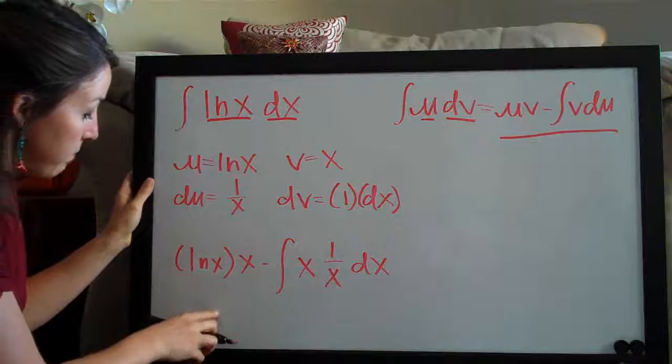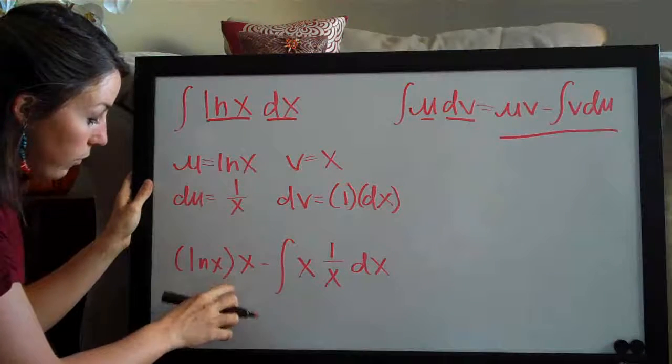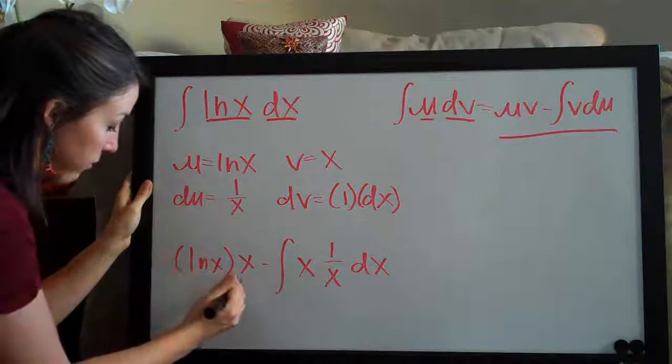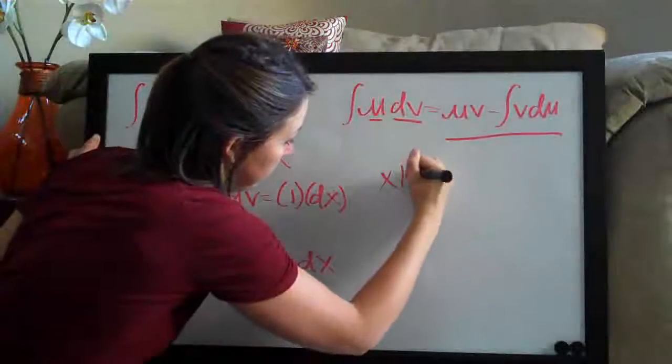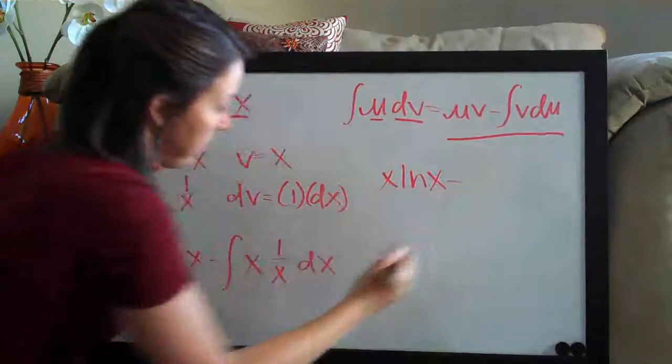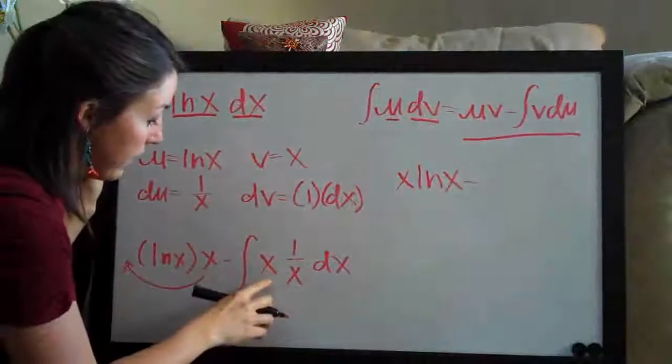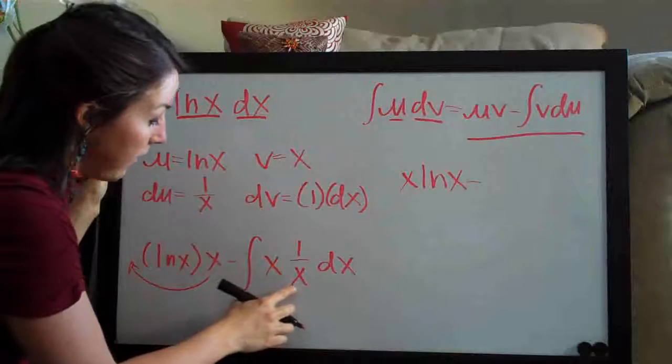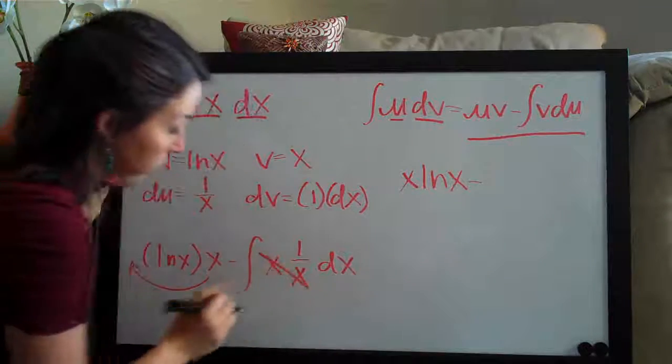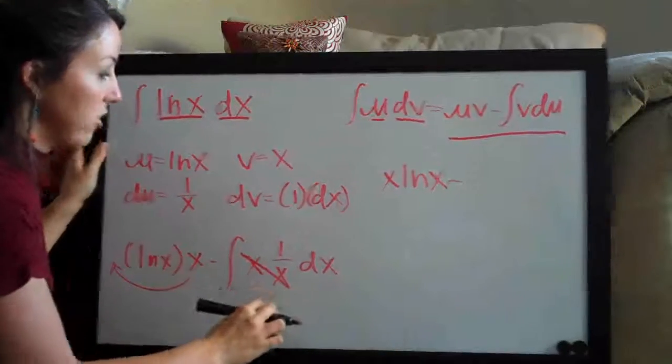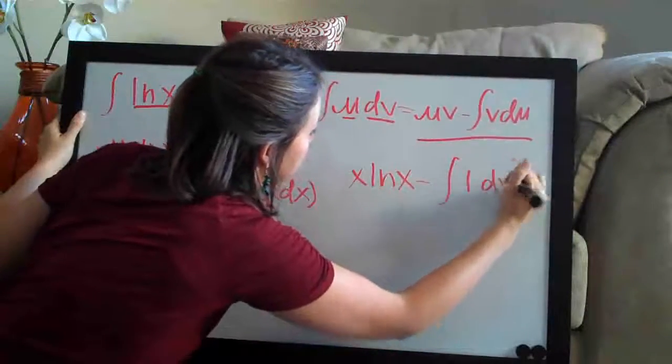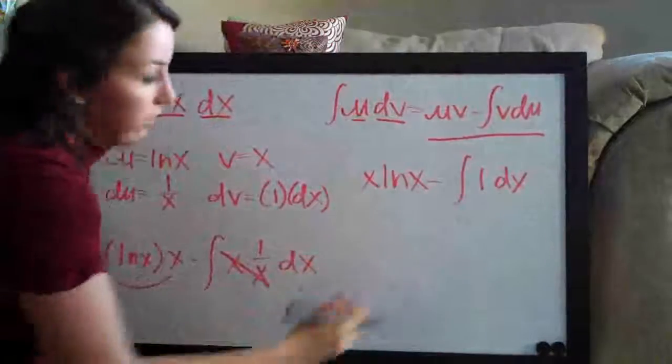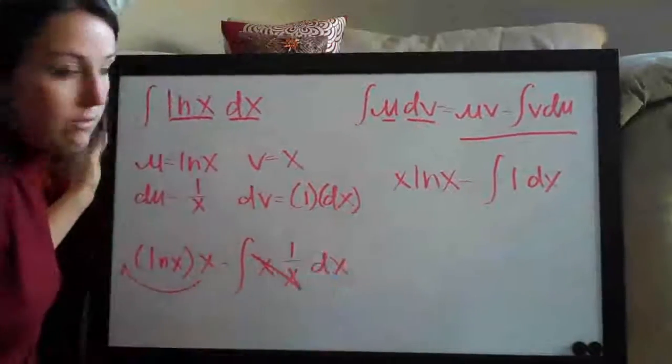Let's go ahead and simplify. Over here we're going to put this x out in front so we will get x ln of x and then minus, here we have an x in the numerator and an x in the denominator so those two cancel and you can see that we actually just get the integral of 1 dx or just dx.